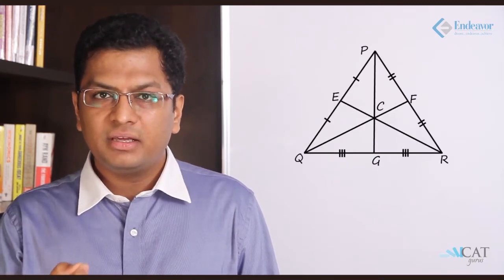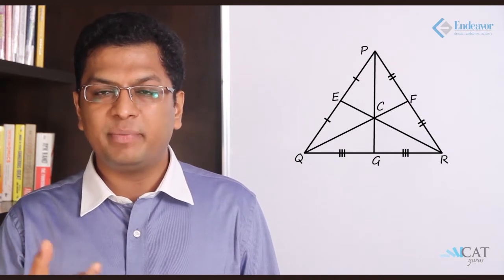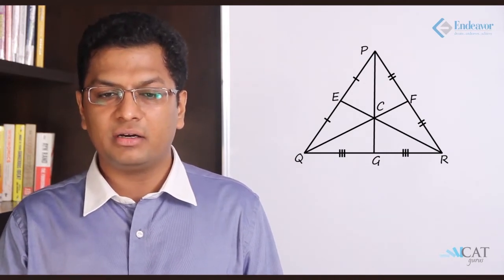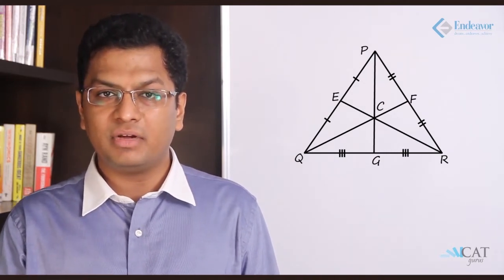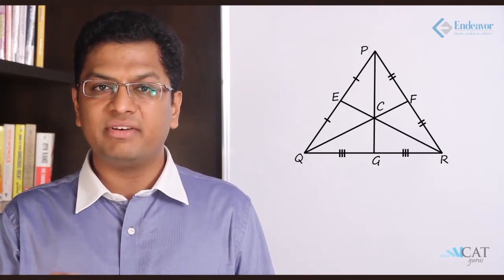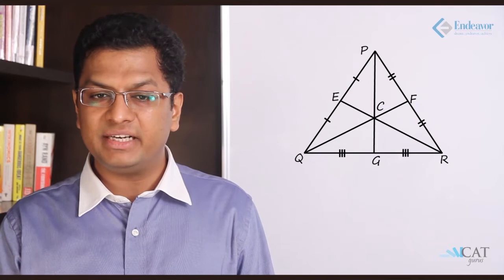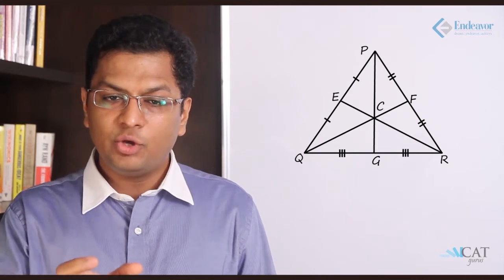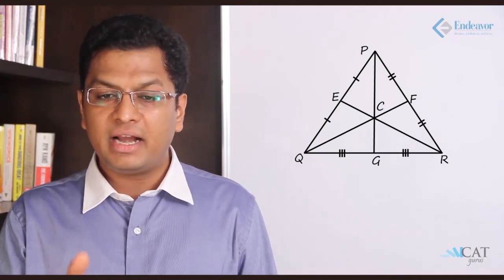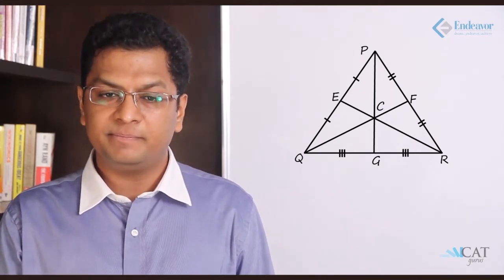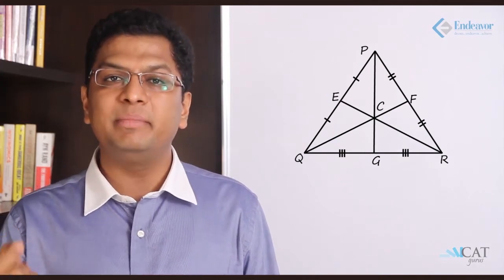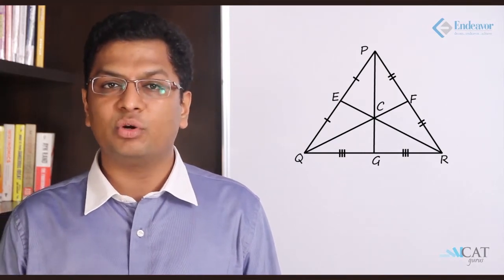There is something called a median and something called a centroid. Let us assume a triangle PQR. P gives a median PG which bisects the side QR. A median is a line from a vertex that divides the opposite side into two equal halves. So PG is one such median, QF is another, and RE is another. The point at which all three medians meet is called the centroid.